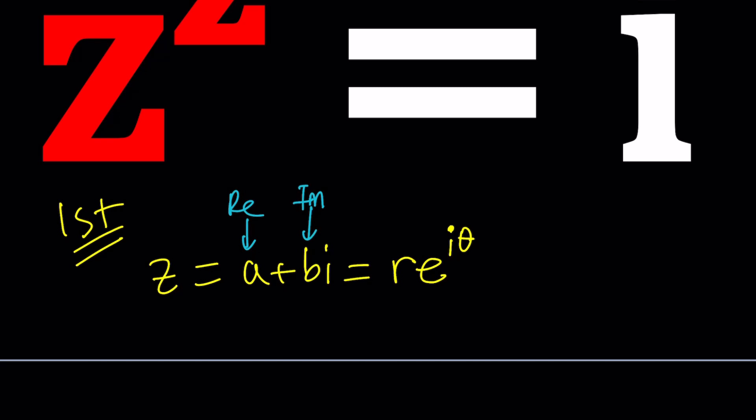And also in polar form using the modulus R or the absolute value of Z and the argument theta. Argument is the angle that our number makes with the x-axis. So in this case we're talking about I so it's going to be a different story, right? Well of course this is not I, this is our Z.